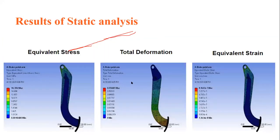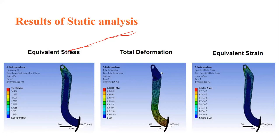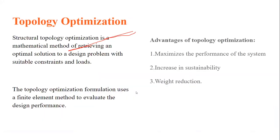Here are the results showing equivalent stress, strain, and total deformation of the original design. The thick blue region indicates the minimum stress produced region. The maximum stress occurs around the fixed support region. The dark blue region is the minimally stressed area. The total deformation behavior is similar to a cantilever beam with a tip load. This is where the topology optimization process begins.